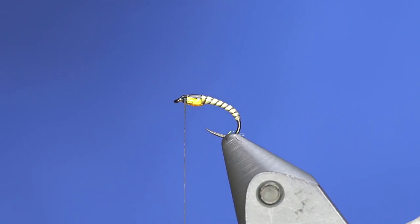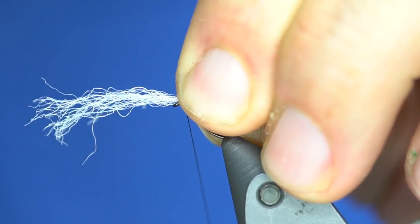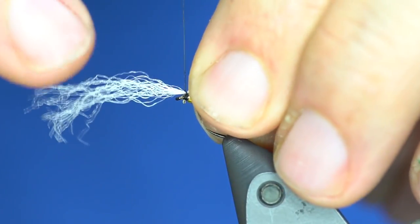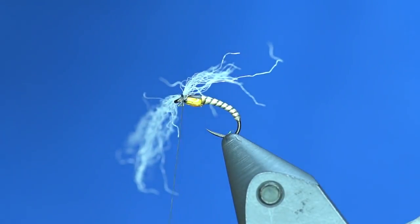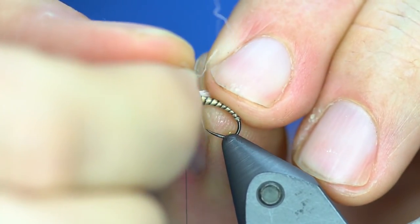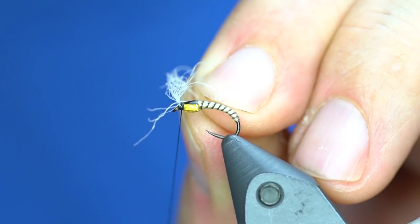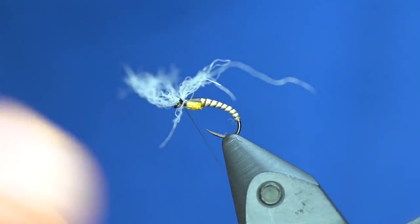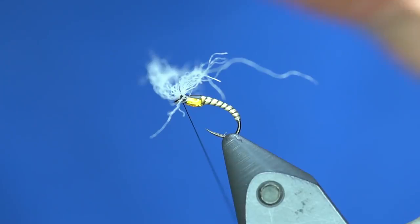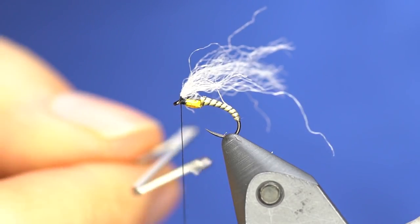And now for the breathers I'm just going to grab some parapost wing material and right on top tie it in parallel, and then I twist it horizontal. And as I do so then I can come in here and put in a couple little figure eight wraps on each side.